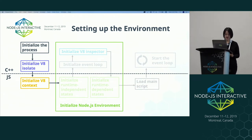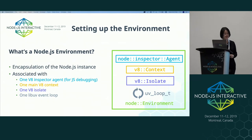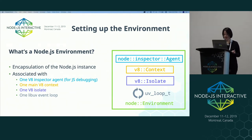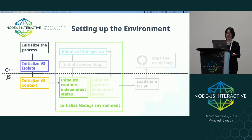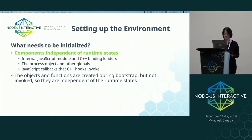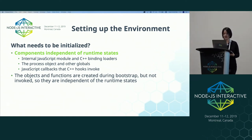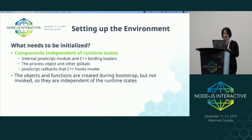After the Node context is initialized, we move on to initialize the entire Node environment. A Node environment is associated with one V8 inspector agent, one main V8 context, one V8 isolate, and one LibUV event loop. To initialize the environment, we first initialize the components that are independent of runtime states. This includes the internal JavaScript module and simple binding loaders, the process object and other globals, and JavaScript callbacks that C++ hooks invoke, which will be in charge of invoking user-provided callbacks later. These objects and functions may depend on runtime states when used, but the creation of them is runtime-independent.